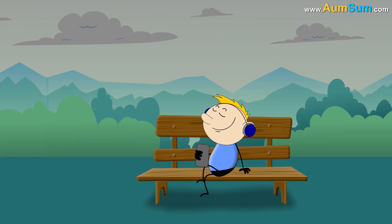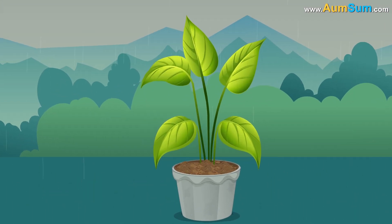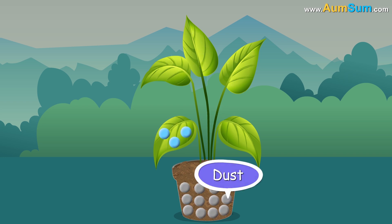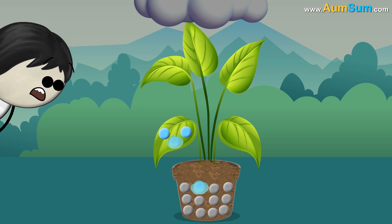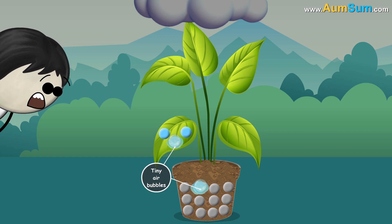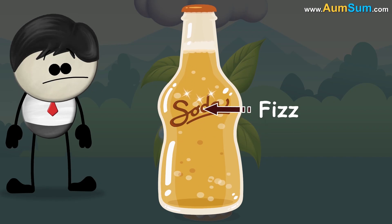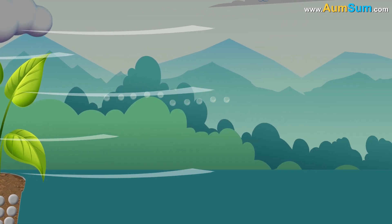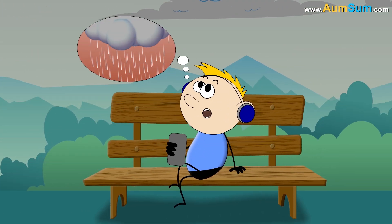The second case occurs when it is already raining somewhere nearby. Usually, surfaces of soil and leaves have aromatic particles of dust and oil on them. When raindrops hit these surfaces, tiny air bubbles containing these aromatic particles are created. Just like fizz rushes upwards in a soda bottle, these air bubbles rush upwards and burst out. Then gusts of wind carry them ahead of the rain, helping us smell the aromatic particles and predict rain.